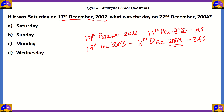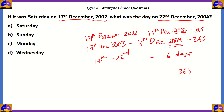We need the day of 22nd December 2004. From 17th to 22nd December, we'll have 6 days. Adding them all up: 365 plus 366 plus 6 gives a total of 737 days.